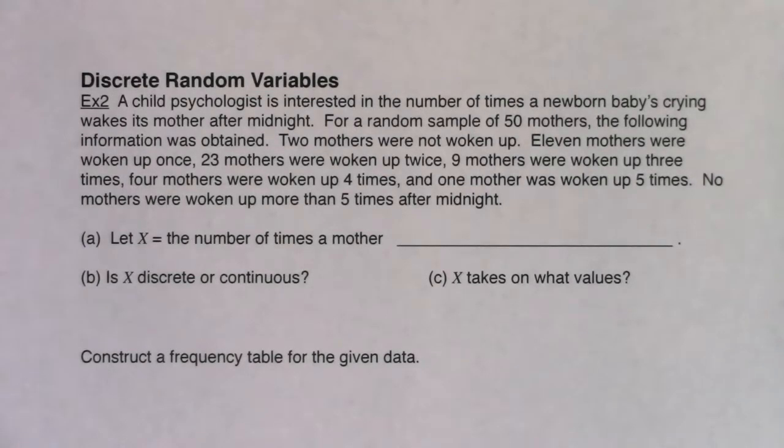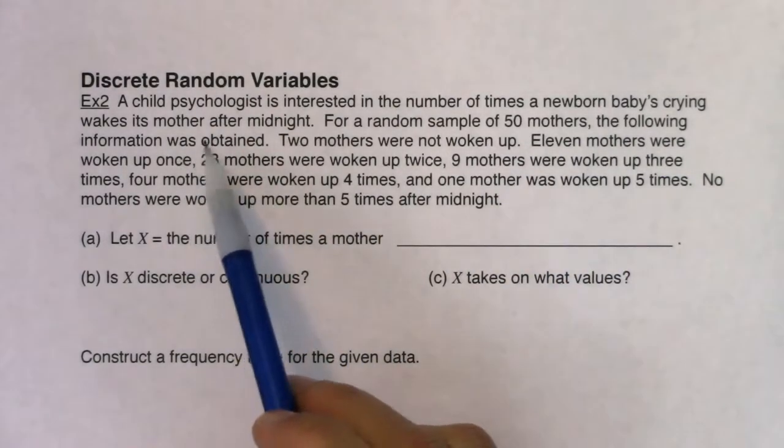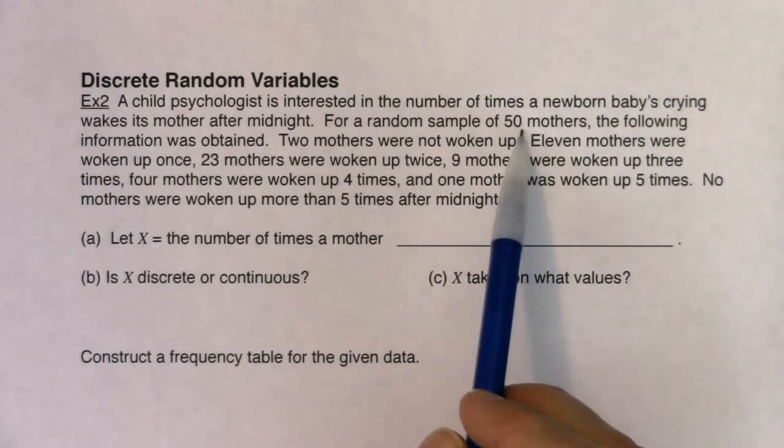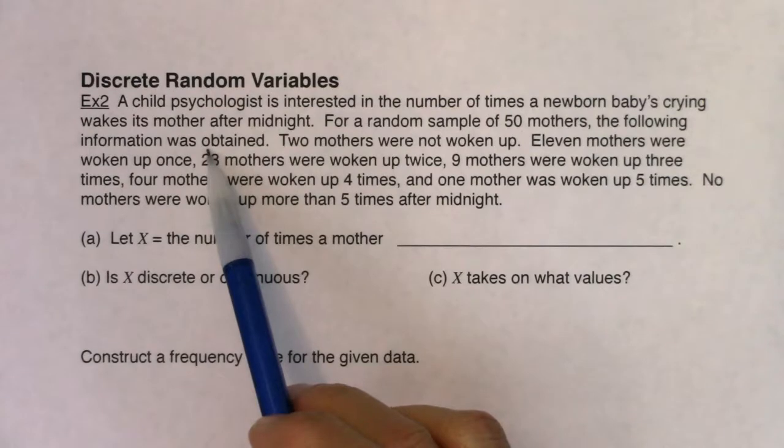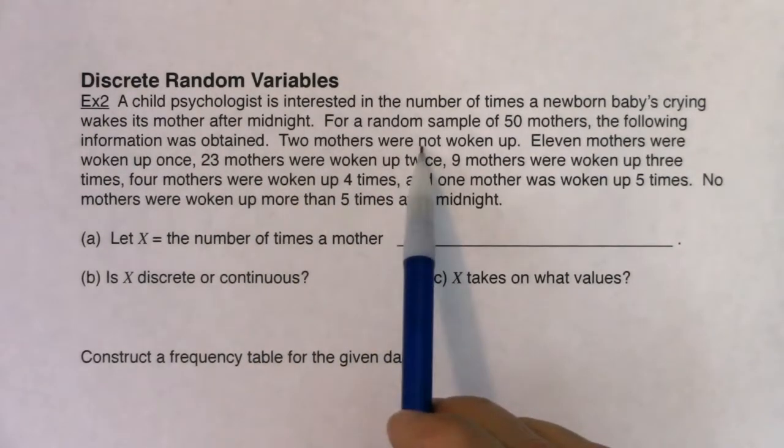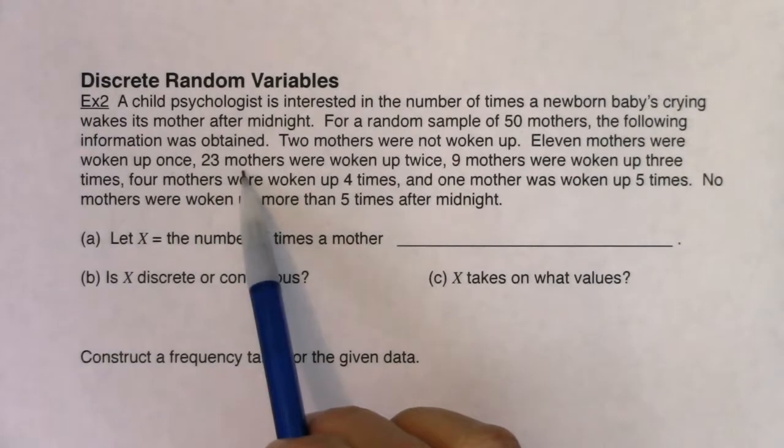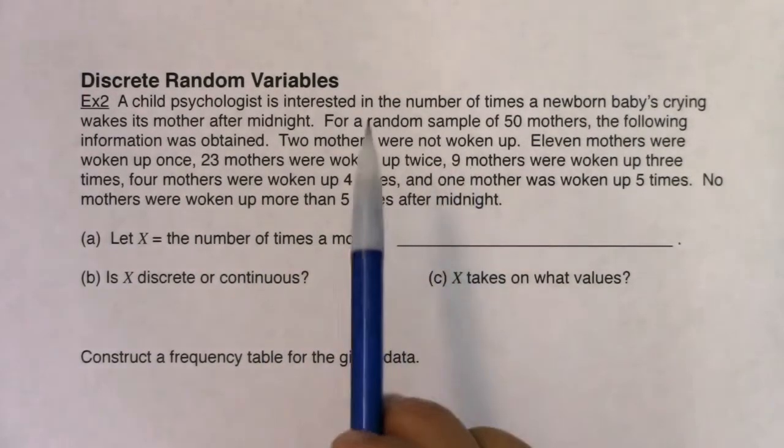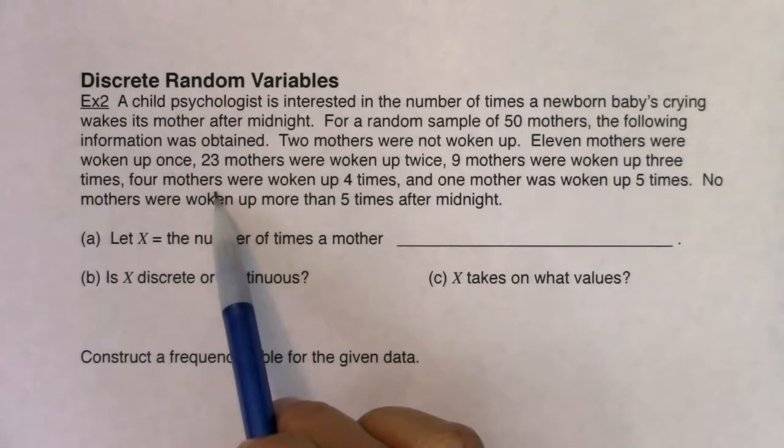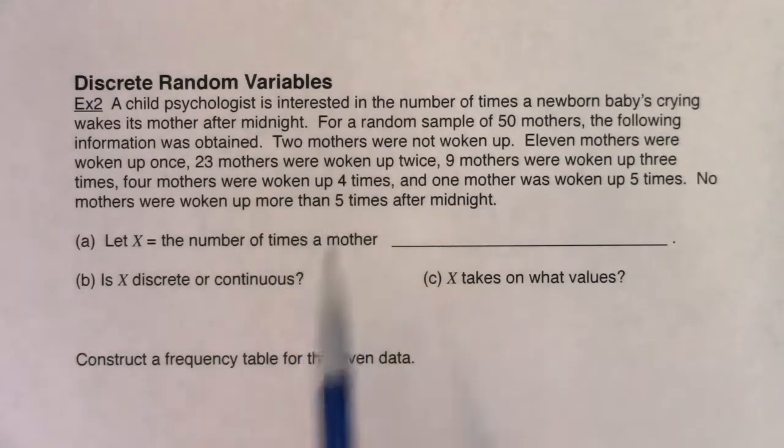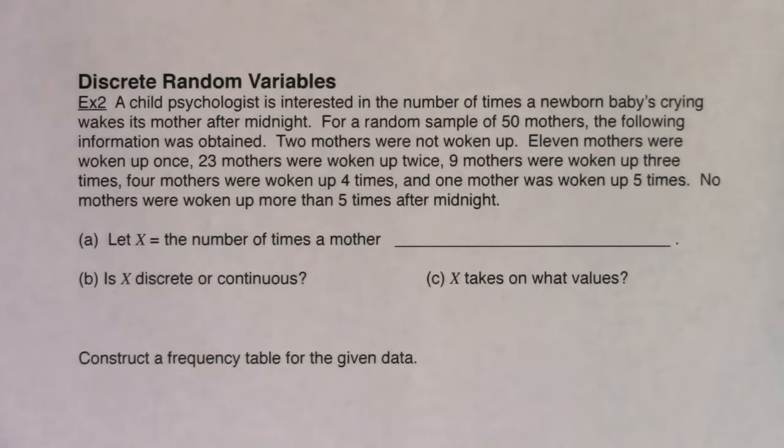In example two, we have a child psychologist interested in the number of times that a newborn baby's crying wakes its mother after midnight. For a random sample of 50 mothers, the following information was obtained: Two mothers were not woken up, 11 mothers were woken up once, 23 mothers twice, nine mothers three times, four mothers four times, and one mother was woken up five times. No mothers were woken up more than five times after midnight.